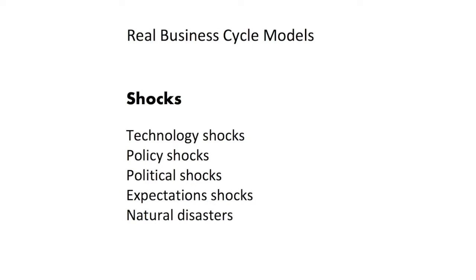In the previous video I introduced the idea of business cycles briefly, and now in this video we're going to start looking at how we might begin to model them in economics. To start with, we need to understand what is meant by a shock and a propagation mechanism. A shock is basically something that changes that is outside of our model — some event that we just assume instantaneously occurs and haven't modeled. It represents a change in our economy which we can then go on to model the impacts of.